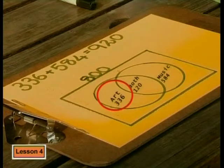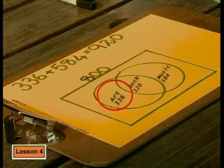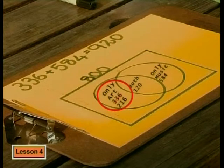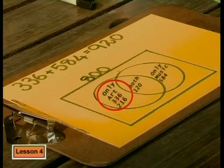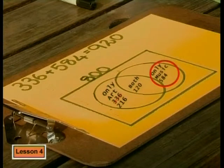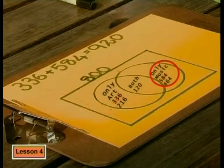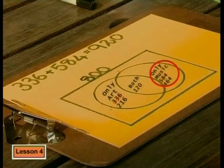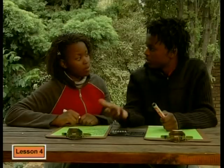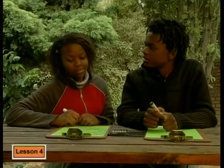We want one part to show people who only want to do art: that's 336 minus 120, which is 216. And the other part shows people who only want to do music: that's 584 minus 120, which is 464. So those are the numbers to hand in.